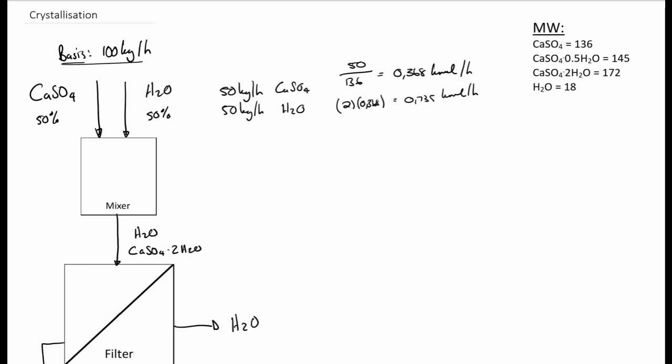It means that we would be using 0.735 kilomoles per hour water to go to the crystal water of the calcium sulfate. This equals to 13.325 kilograms per hour of the water that has been taken out of the liquid stream and becoming part of the calcium sulfate dihydrate crystals. Which means this value is now going to be 63.235 kilograms per hour of calcium sulfate dihydrate. And the water is going to be 36.765 kilograms per hour. And the sum of this will still be equal to 100, which was coming in.